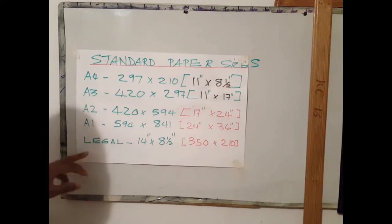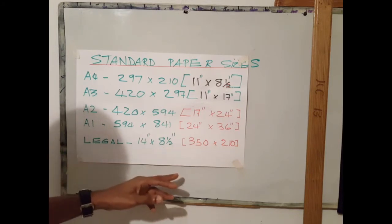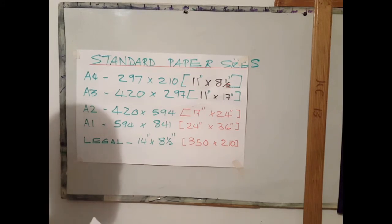We have legal size paper which is the one that we normally use in our regular household or domestic printer. It is 14 inches by 11 inches or 350 millimeters by 210 millimeters.